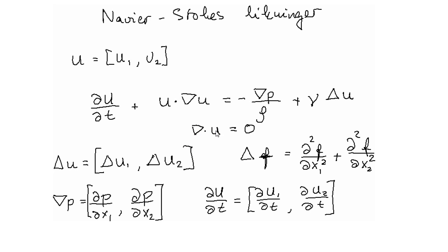In addition, we have that the divergence of this vector function u should be equal to zero. We recall that the divergence of a vector is just the partial derivative of the first component with respect to the first variable plus the partial derivative of the second component with respect to the second variable. This quantity being zero means we have incompressible fluid — the divergence is always zero in such cases.